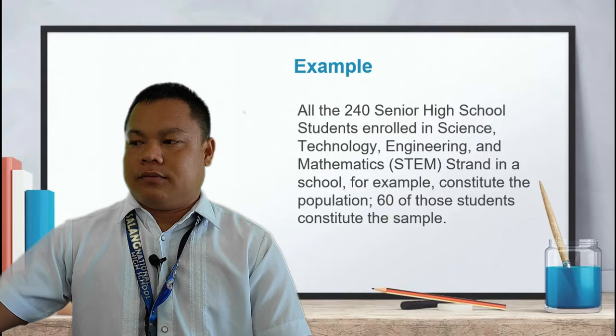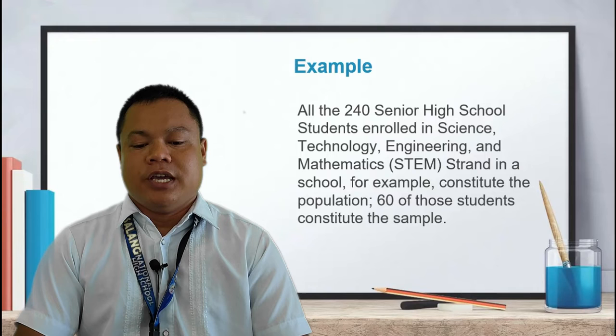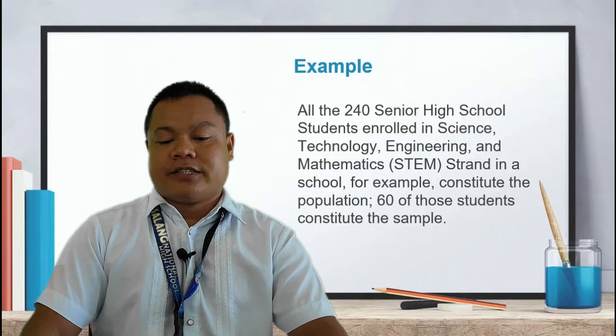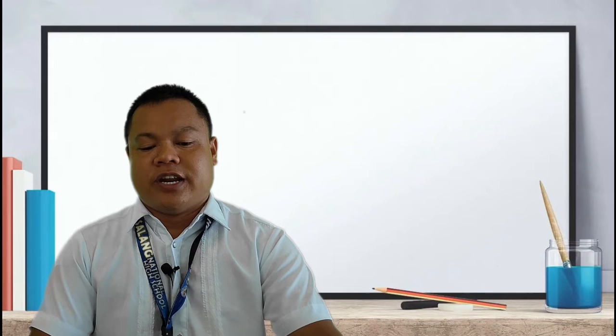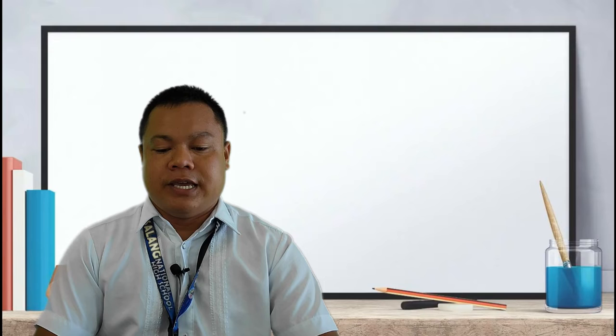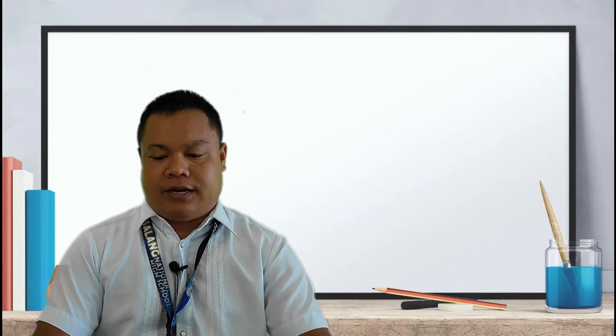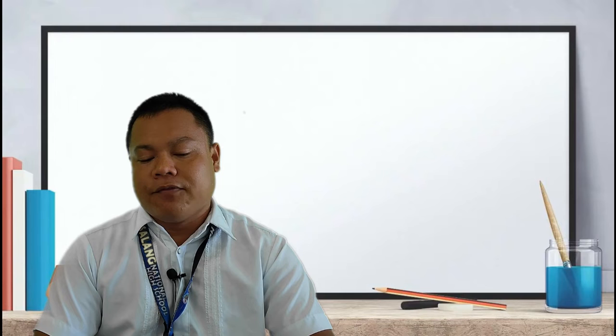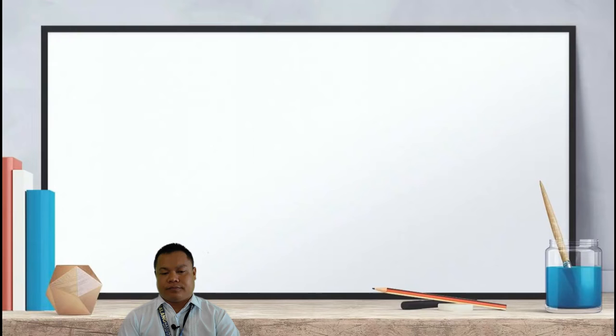The representative subset of the population is referred to as the sample. For example, all 240 senior high school students enrolled in the Science, Technology, Engineering, and Mathematics strand constitute the population. Then, 60 of those students constitute the sample. A good sample should have characteristics representative of the population with fair accuracy. Generally, the larger the sample, the more reliable it is, but this still depends on the scope, delimitation, and research design of the study.